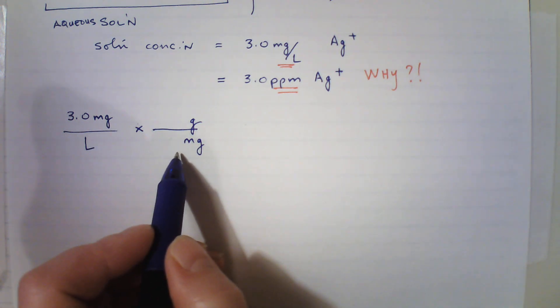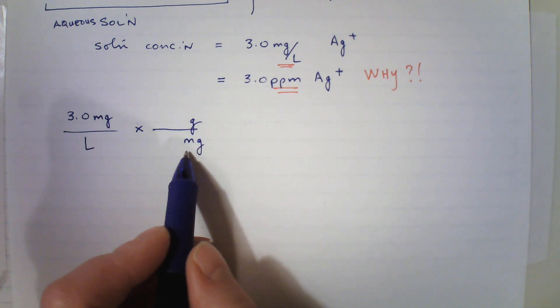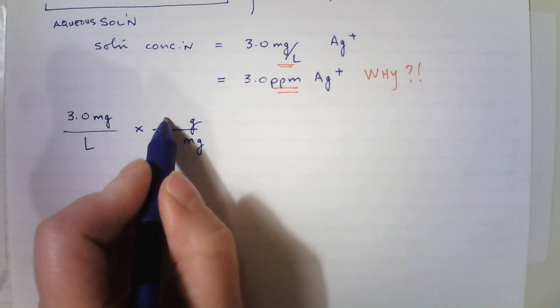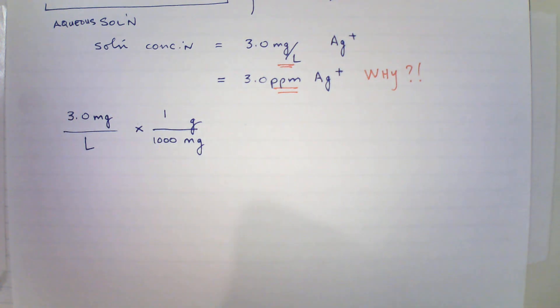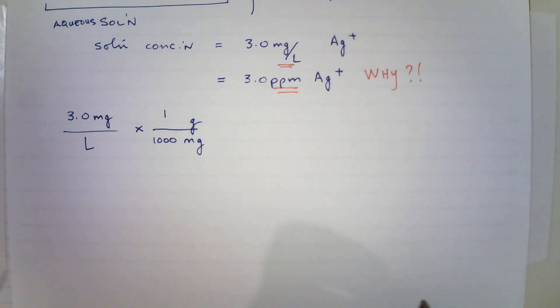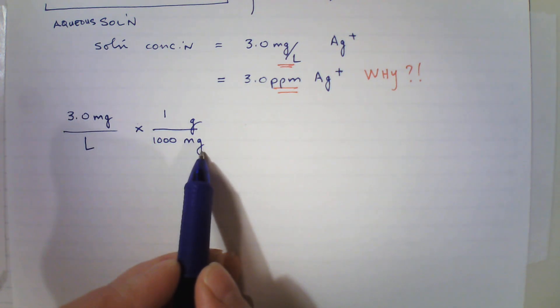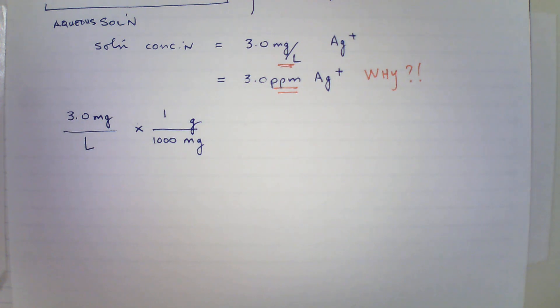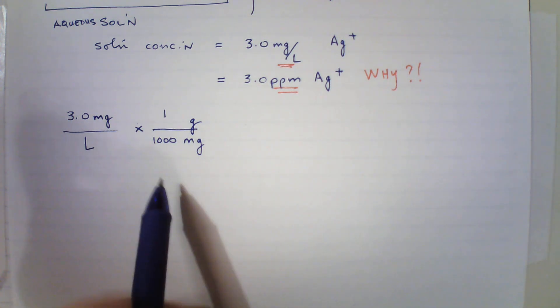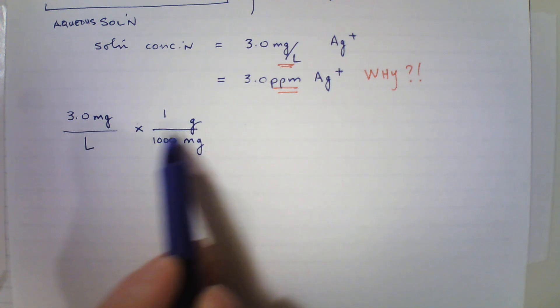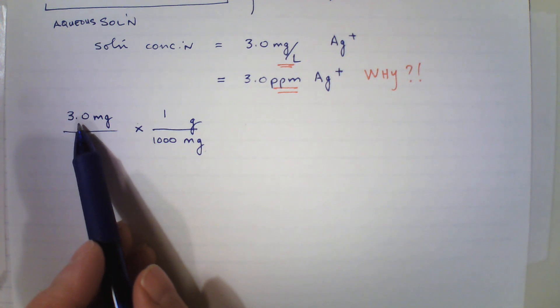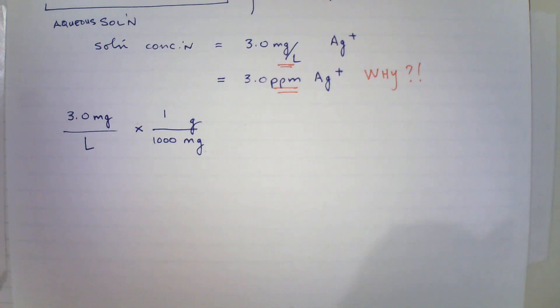So what is my conversion factor to convert from milligrams to grams? And I set it up this way so that when I multiply, things on the top and the bottom cancel. Well, I know that one gram is equivalent to 1000 milligrams. Perfect. So I know that when I multiply this, this guy will cancel with this, and now I will have my unit in grams. It'll be grams per liter, right? If that unit goes out with this unit, I'm left with grams per liter, and the number would be 3.0 times 10 to the minus 3, because I'm dividing 3 by 1000. So it'll be 0.003 grams per liter.